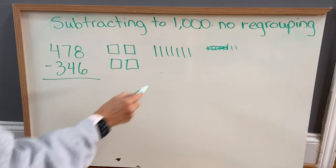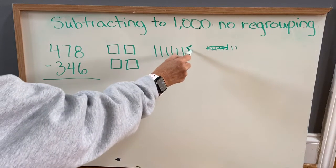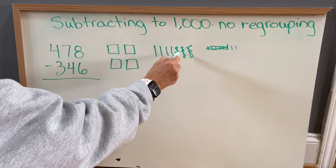Now seven minus four, we have seven tens. We're going to take four of those away. Two, three, four.